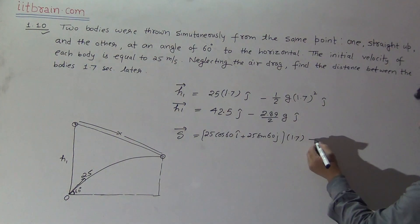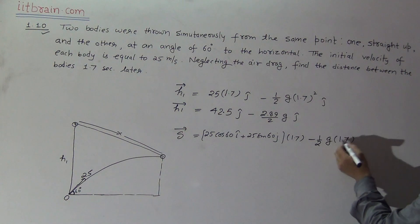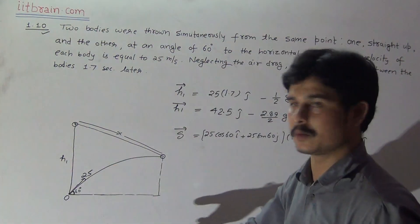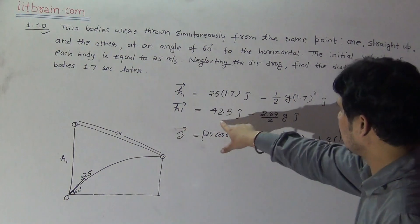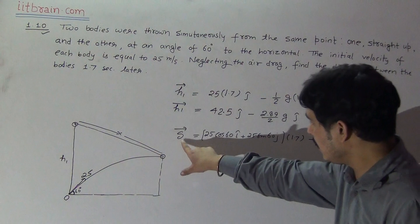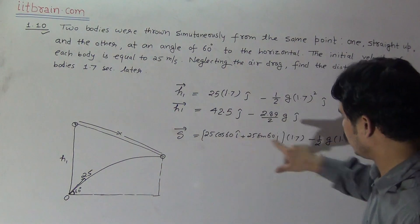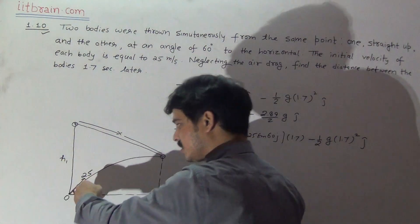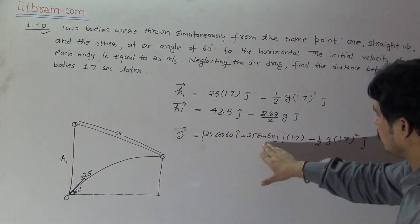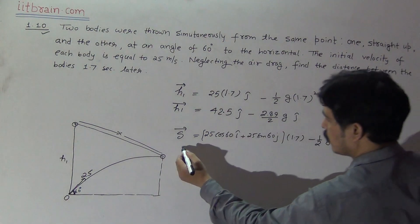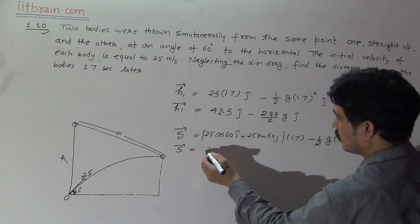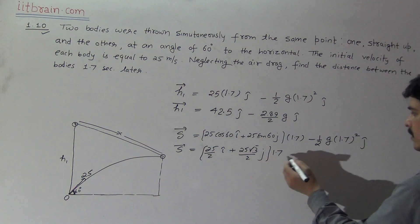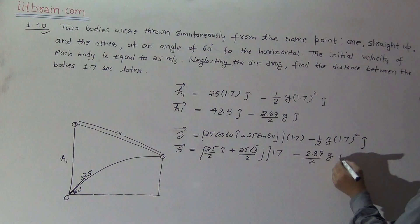The position of the second particle after 1.7 seconds is: s = (25·cos60·i + 25·sin60·j)×1.7 − (1/2)g·t²·j. On solving, this becomes (25/2)·i + (25√3/2)·j multiplied by 1.7, minus (2.89/2)·g·j. This is the position vector of the second particle.